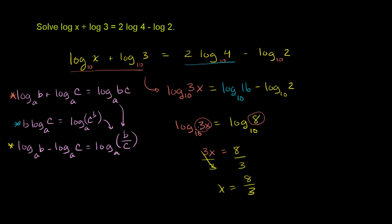Another way to think about this step: if you raise 10 to both sides, 10 raised to the power needed to get 3x gives you 3x, and 10 raised to the power needed to get 8 gives you 8. So once again, 3x equals 8, and x equals 8 thirds.